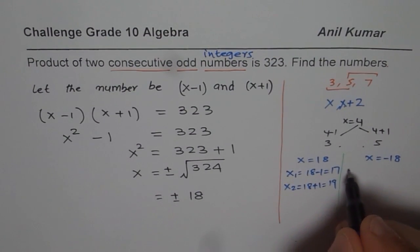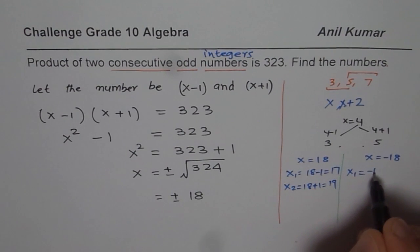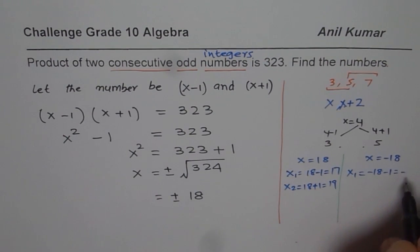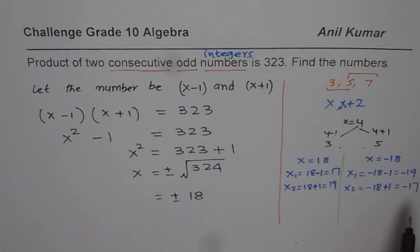Here the numbers will be x1 will be minus 18 minus 1 which is minus 19 and x2 will be minus 18 plus 1 which will be minus 17. Remember if you multiply two negative numbers you do get a positive number. So these are combinations of our answer.